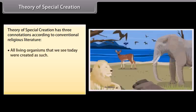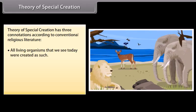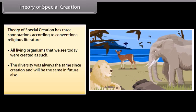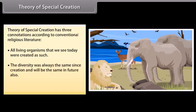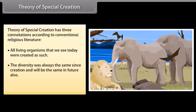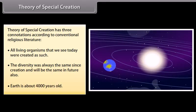Theory of Special Creation: The Theory of Special Creation has three connotations according to conventional religious literature. All living organisms that we see today were created as such. The diversity was always the same since creation and will be the same in the future also. Earth is about 4000 years old.